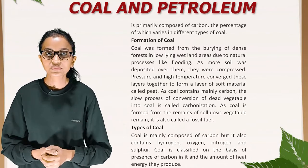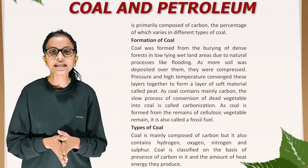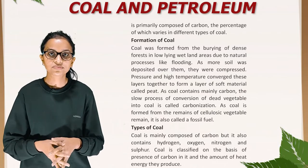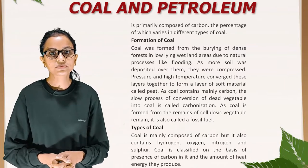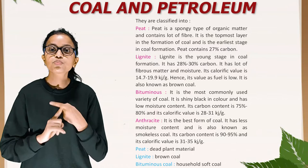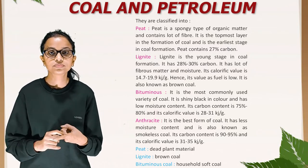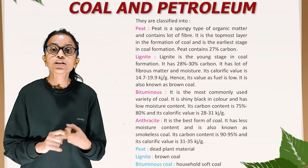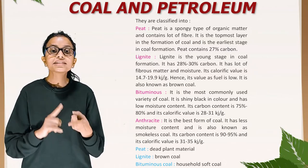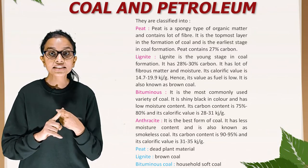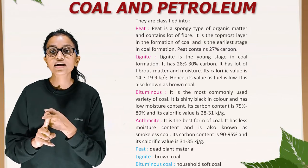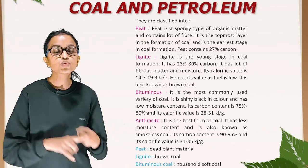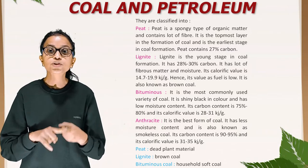Types of coal: Coal is mainly composed of carbon but it also contains hydrogen, oxygen, nitrogen and sulphur. Coal is classified on the basis of presence of carbon in it and the amount of heat energy they produce. They are classified into peat — a spongy type of organic matter containing a lot of fibre, the topmost layer in the formation of coal with 27% carbon. The second is lignite, the young stage in coal formation with 28 to 30% carbon, containing fibrous matter and moisture, with a calorific value of 14.7 to 19.9 kilojoule per gram, hence its value as fuel is low.